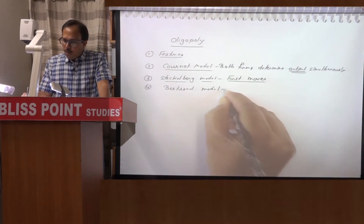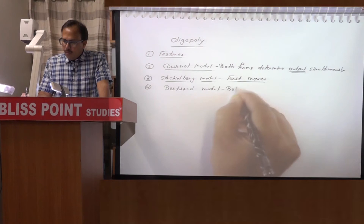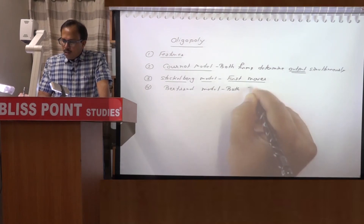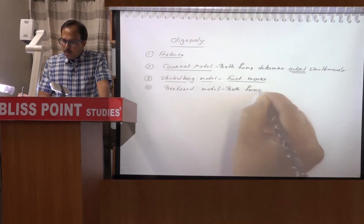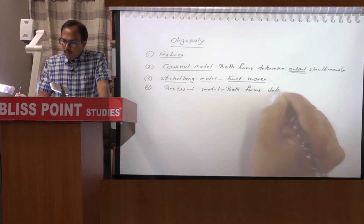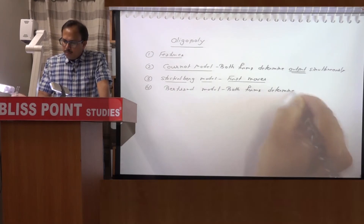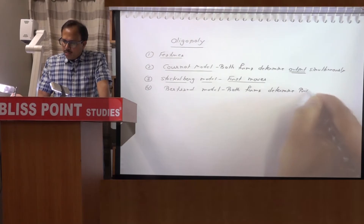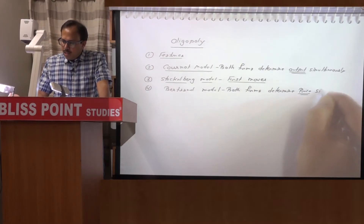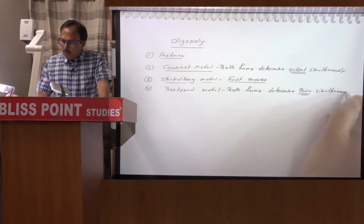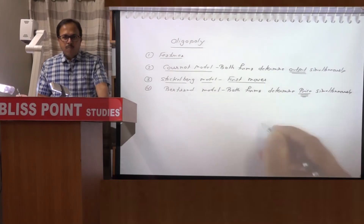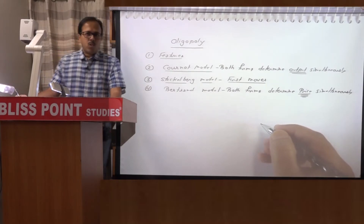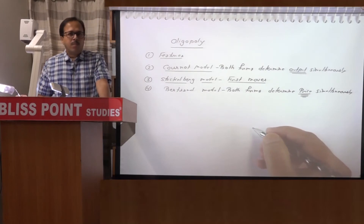The Bertrand model assumes that both firms determine price simultaneously. The keyword here is price. When one firm sets the price, it assumes that the price set by the other firm will remain constant. So we have different behavioral assumptions — conjectural variations — and based upon each, there are different models.